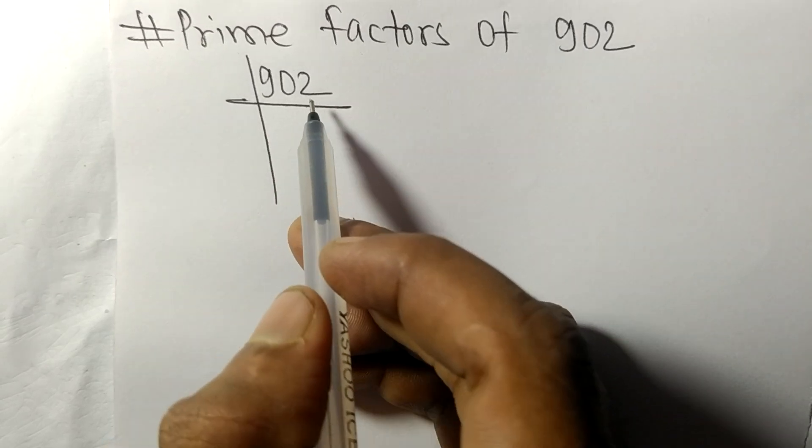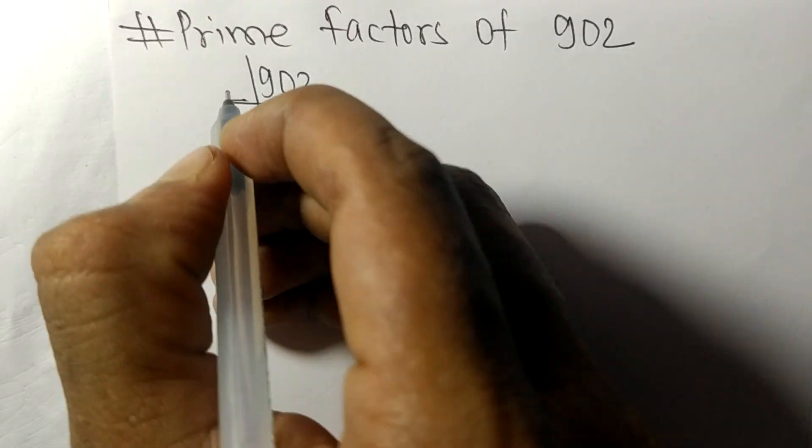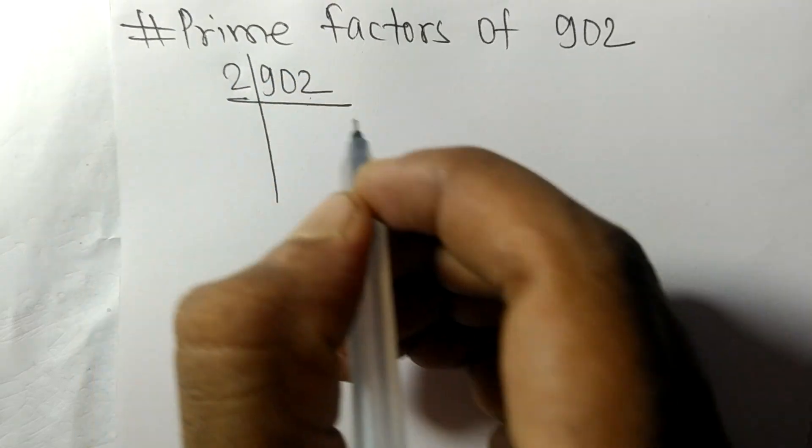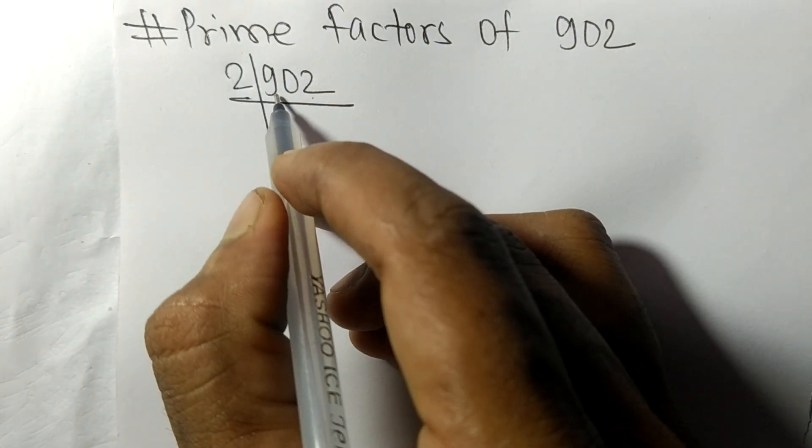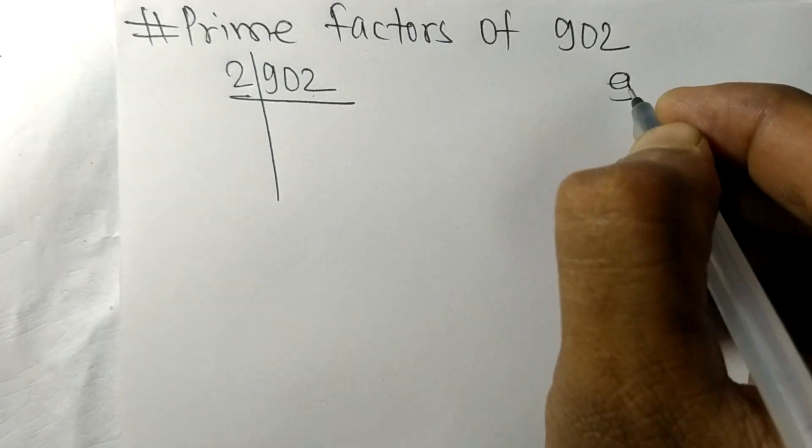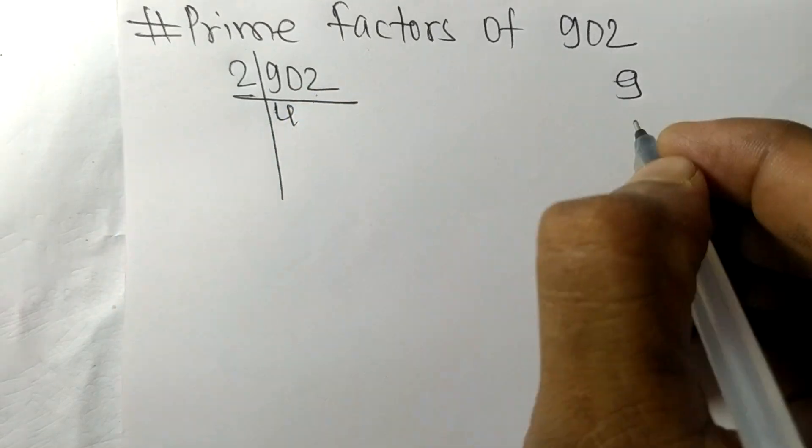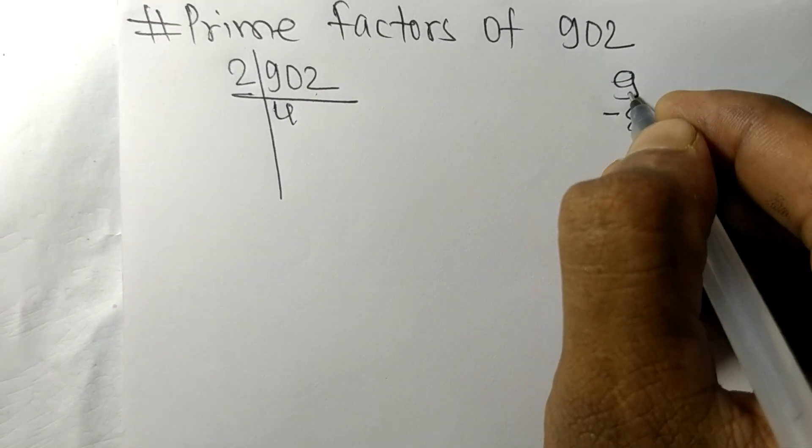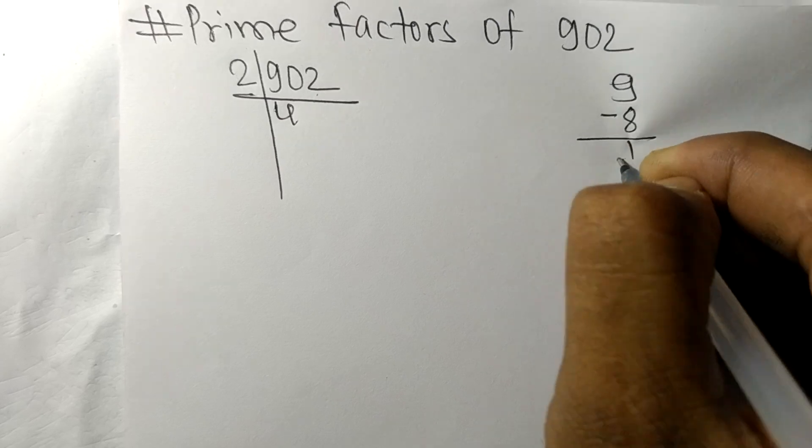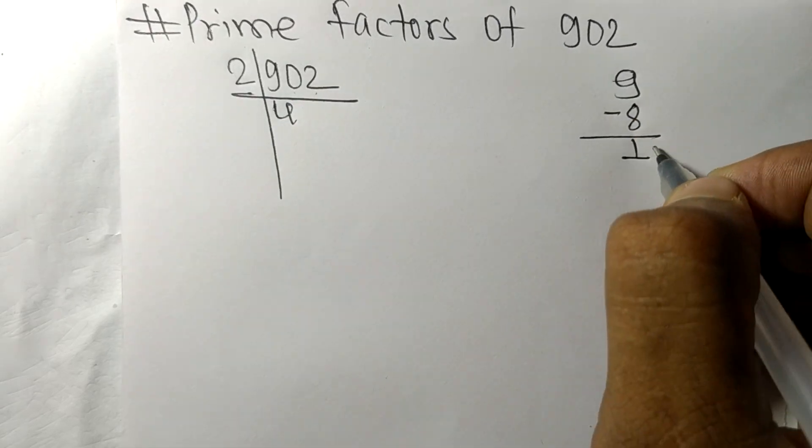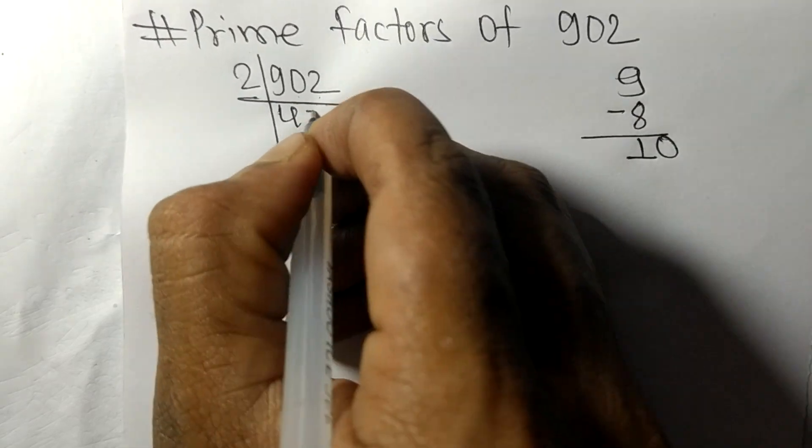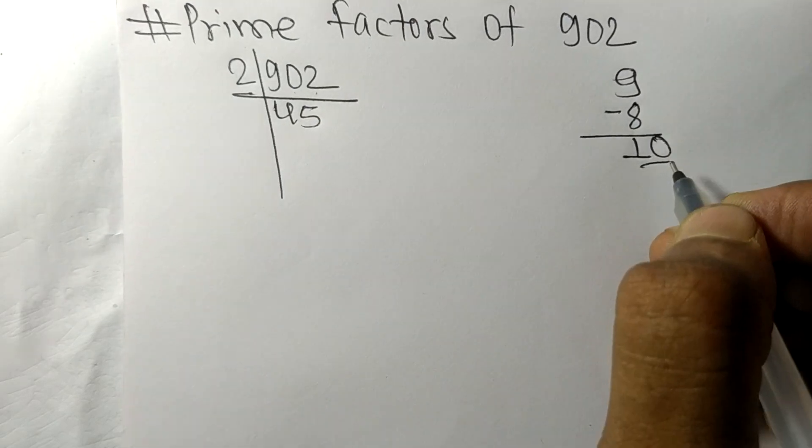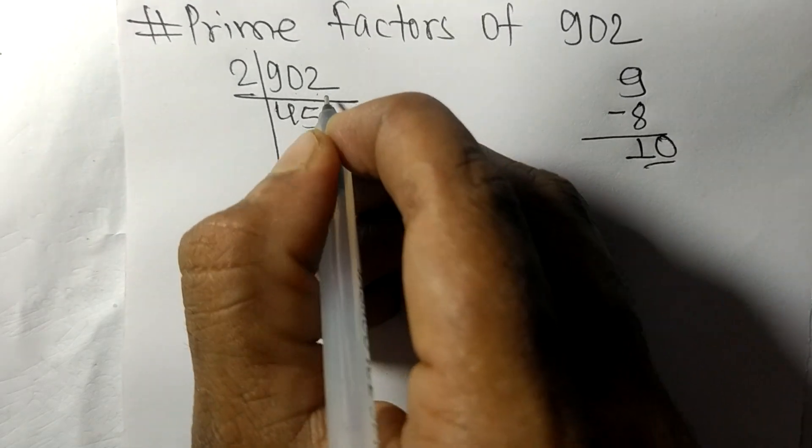First we have 9, so 2 times 4 is 8. On subtracting we get 1, and this 0 becomes 10. 2 times 5 is 10, and 2 times 1 is 2.